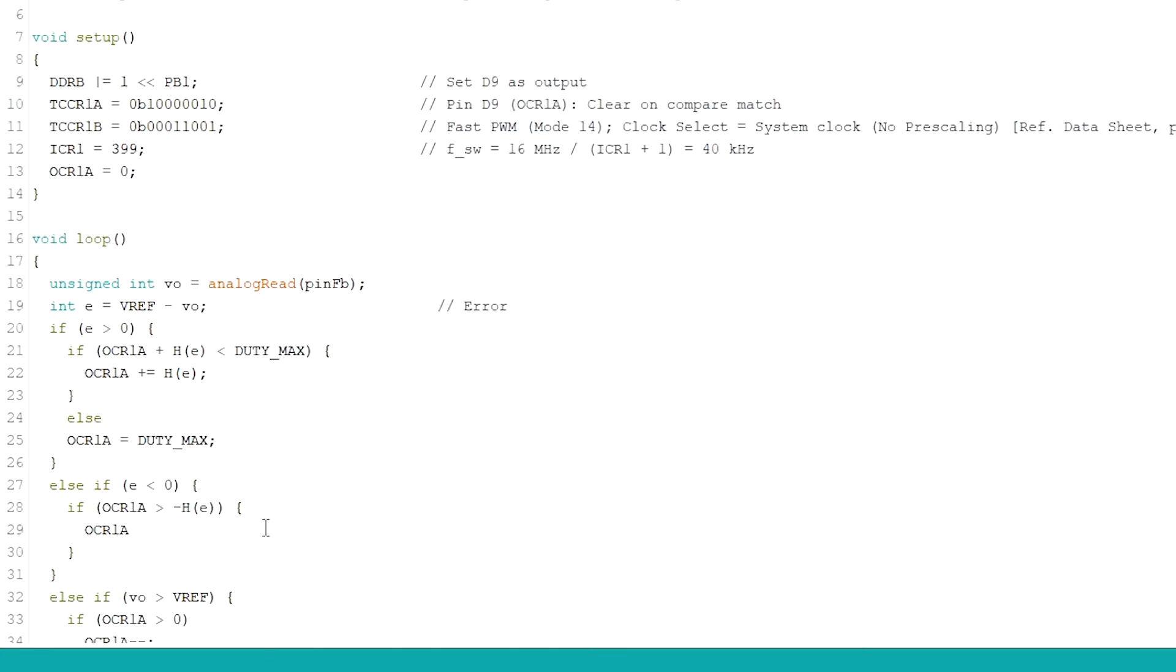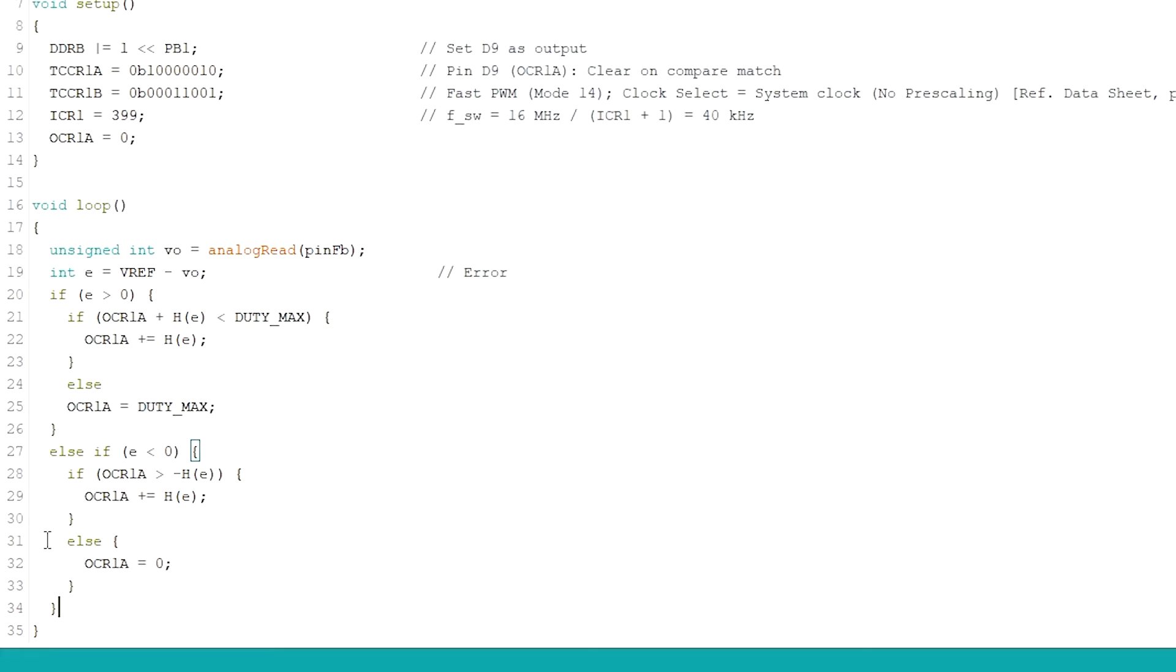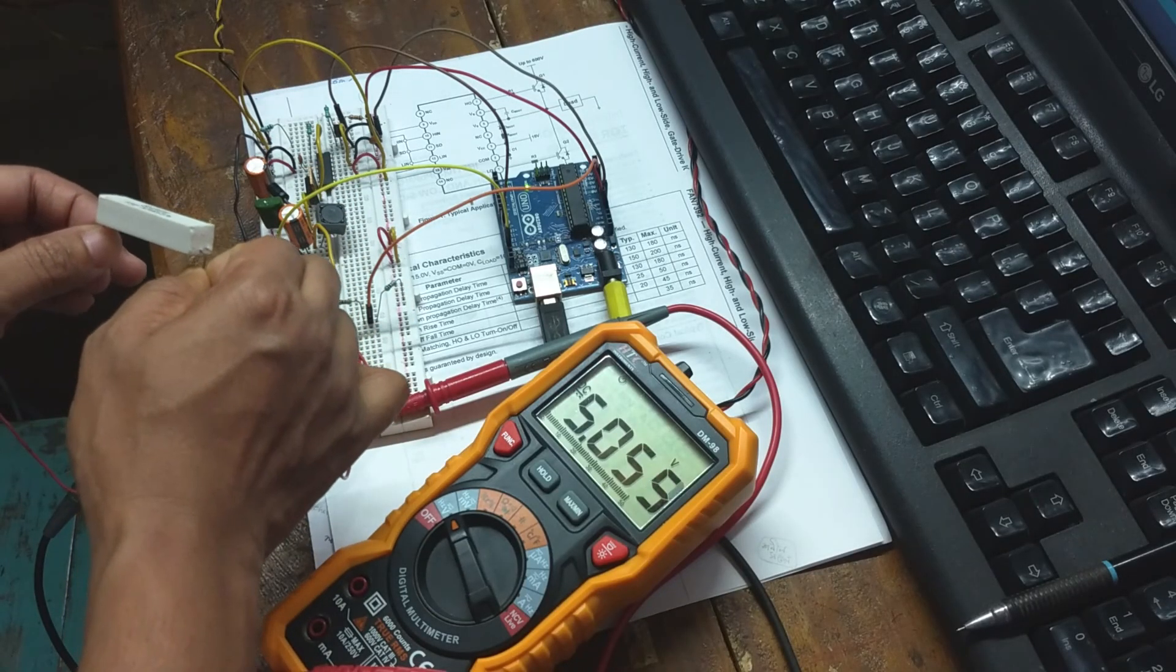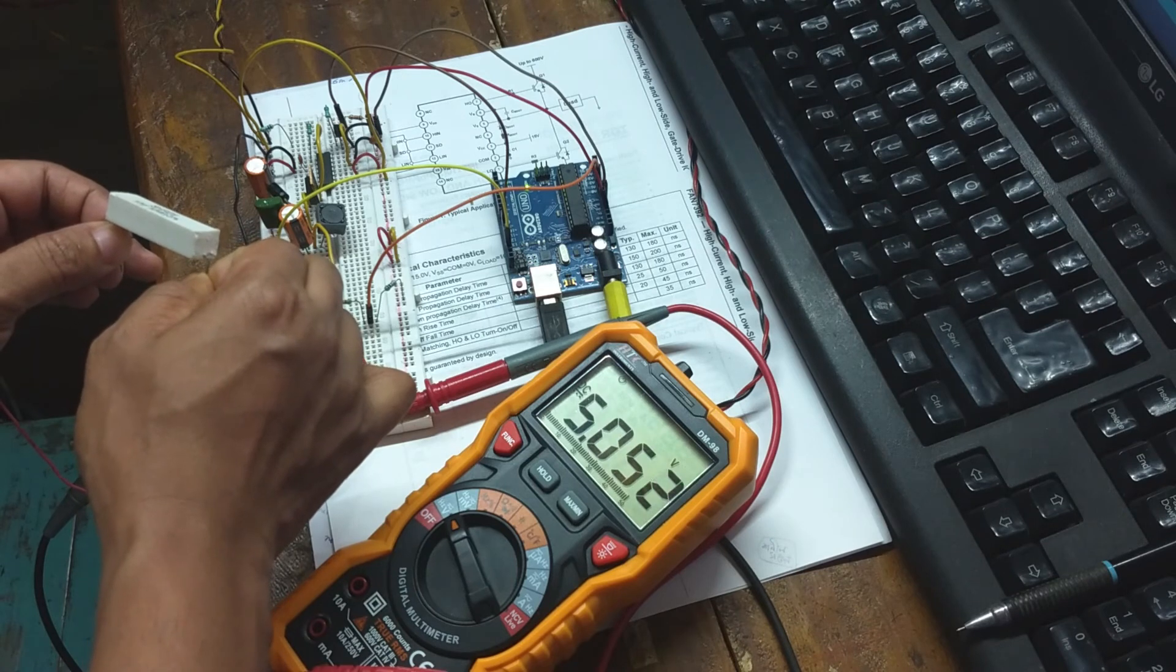This can be easily solved by implementing a proportional control action. That is the duty cycle will be incremented or decremented by a value proportional to the error voltage. Here the error voltage means the difference between the reference voltage and the output feedback voltage. Now as you can see the voltage is much stable while I am connecting or disconnecting the load.